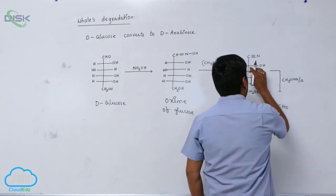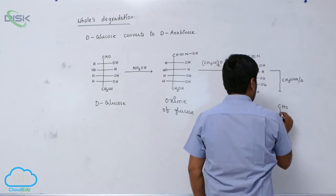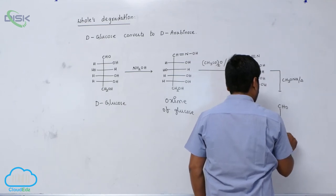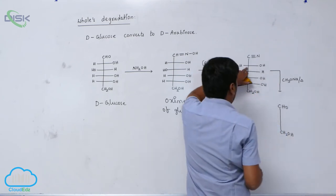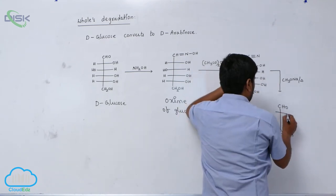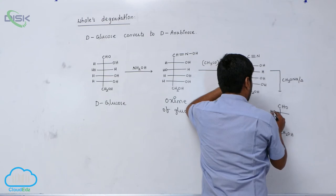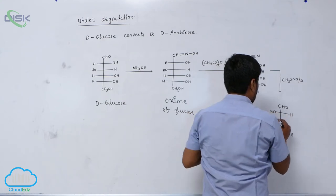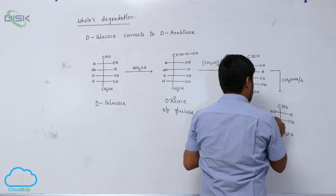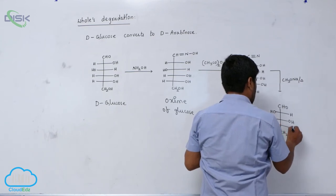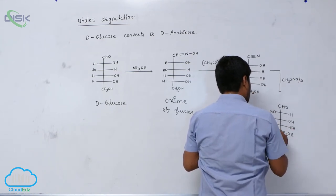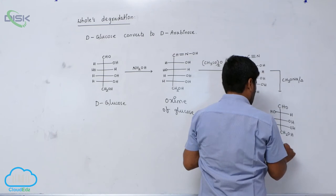This carbon converts into aldehyde. Next CH2OH, this carbon converts into aldehyde. Then this OH is left, one OH is right, the next carbon OH is also right side. This is known as D-arabinose.